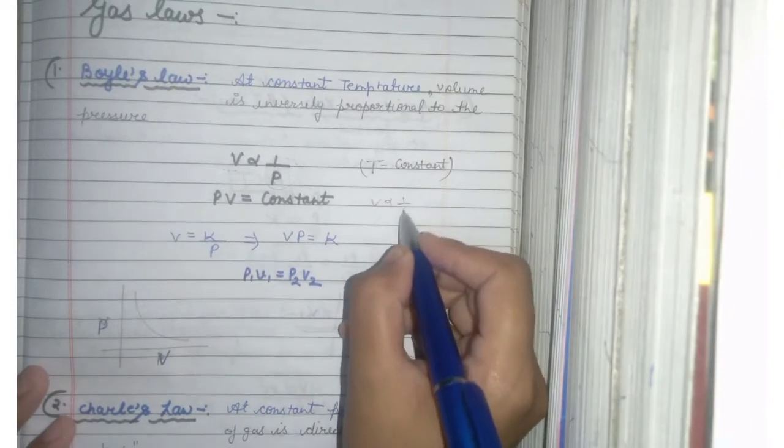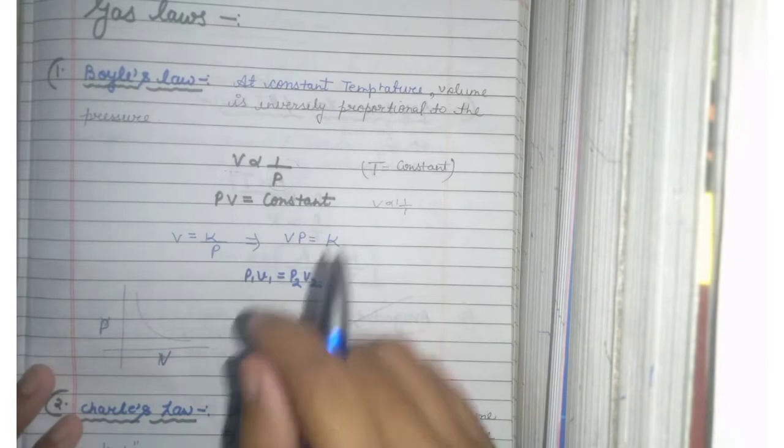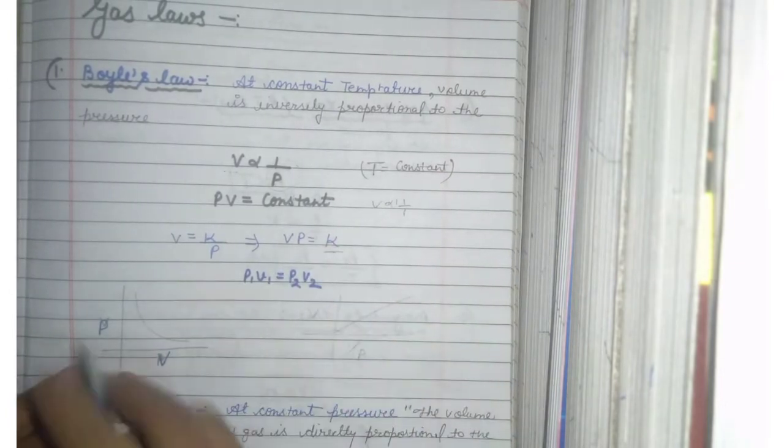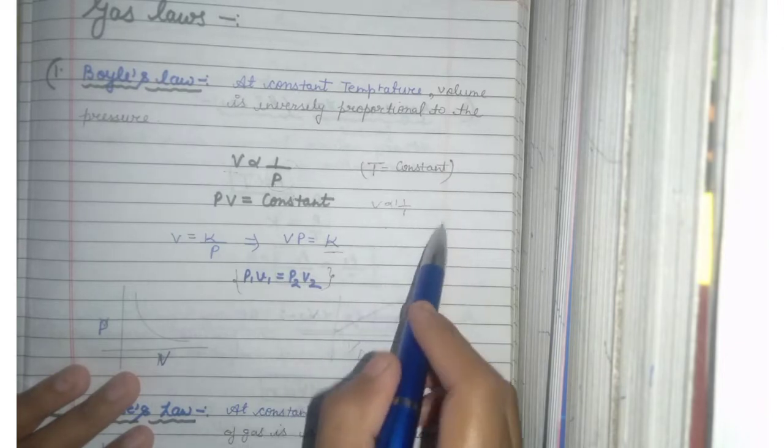The PV is constant because T is constant. V is directly proportional to 1 over P. When you take the sign of proportional, it is constant which means K. Here is K.